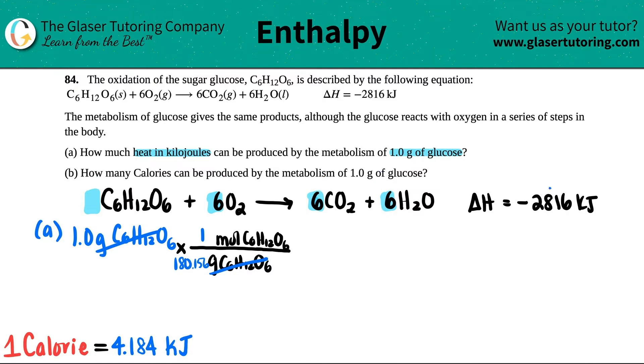So this 2,816 kilojoules of heat is released per every one mole of glucose, per every six moles of O2, per every six CO2s and per every six H2Os. We specifically want the mole of C6H12O6. So let's just keep going.